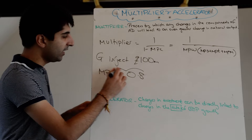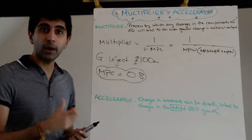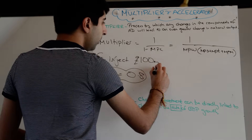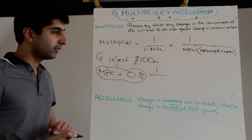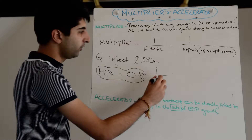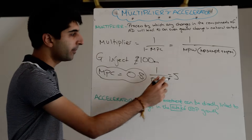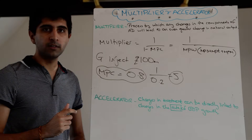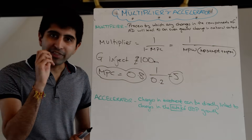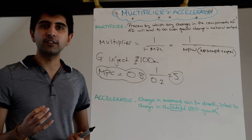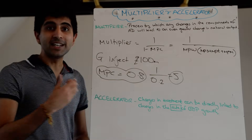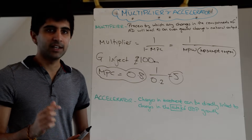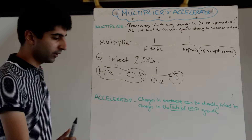Now immediately we can work out the multiplier value, and then work out what the final change in real GDP will be — and it won't just be an increase of £100 million. So: 1 over 1 minus 0.8, which is 1 over 0.2, and that gives you the value of 5. That is our multiplier effect. We then times the multiplier by the initial increase in spending of £100 million, so 5 times £100 million gives you £500 million — that's the final change in national output. Basically, £400 million is how much extra national output has increased as a result of the multiplier effect.